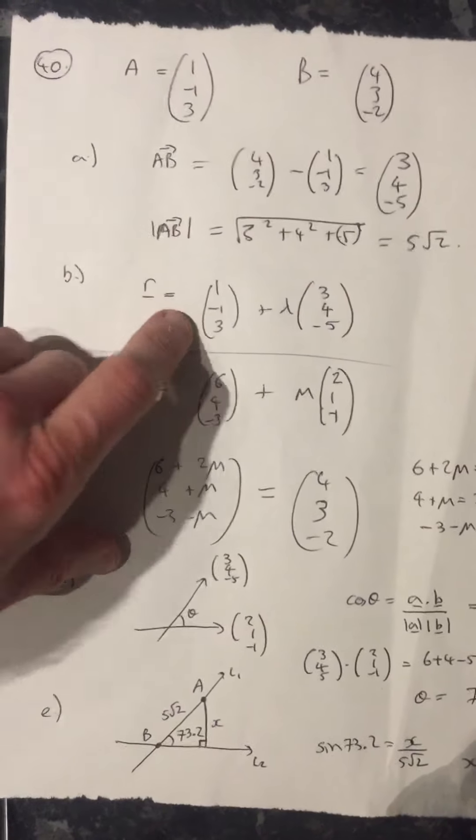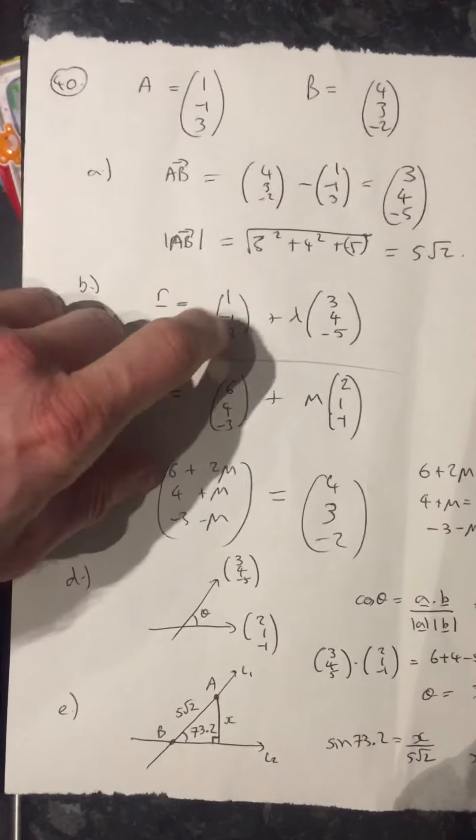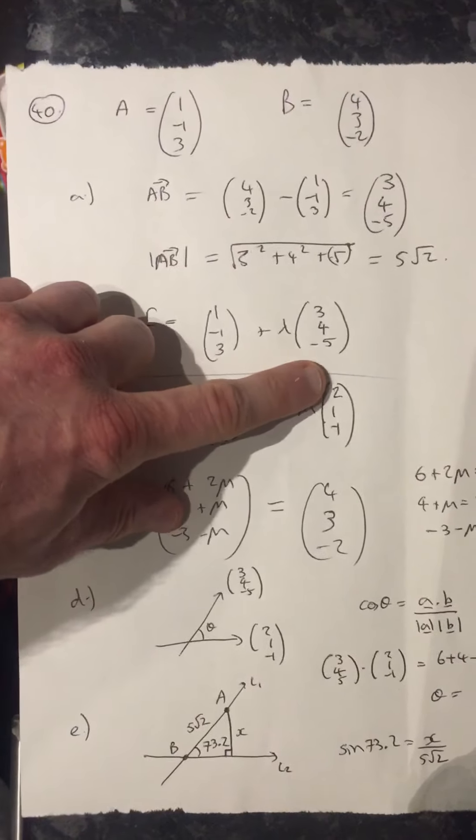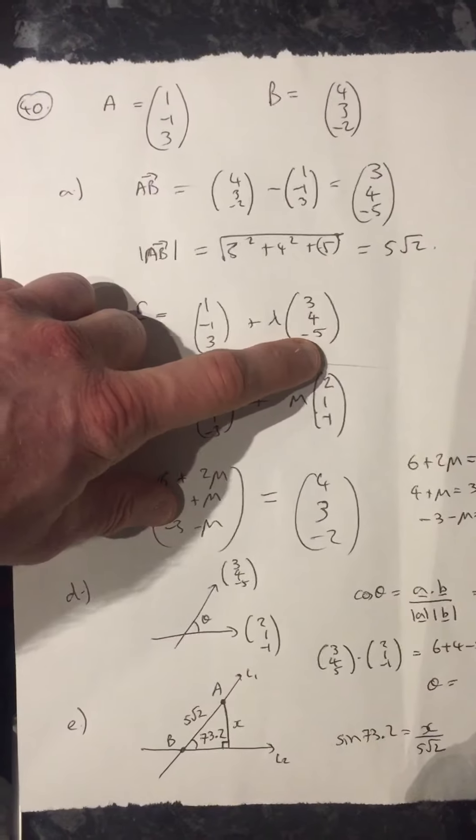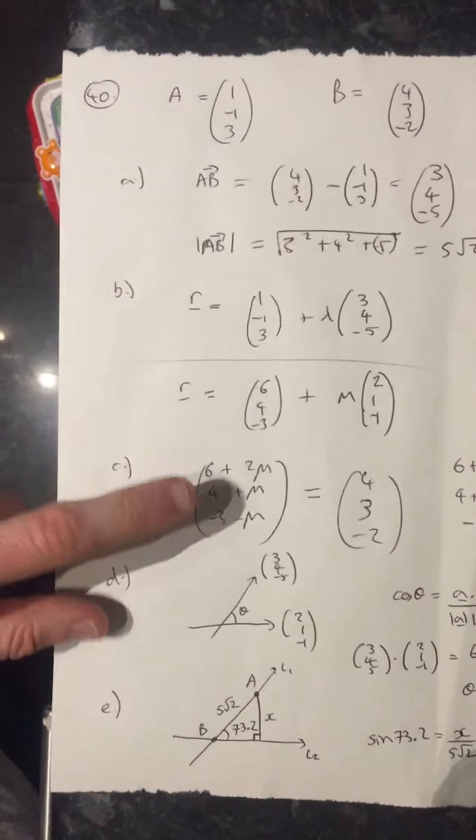And then the magnitude of that, if I just do Pythagoras on this vector, I get the magnitude. Then I need to work out the equation of the line between them. So I've just taken point A plus lambda times the direction vector, which we know is the same thing as doing AB. So that's part B of the question.